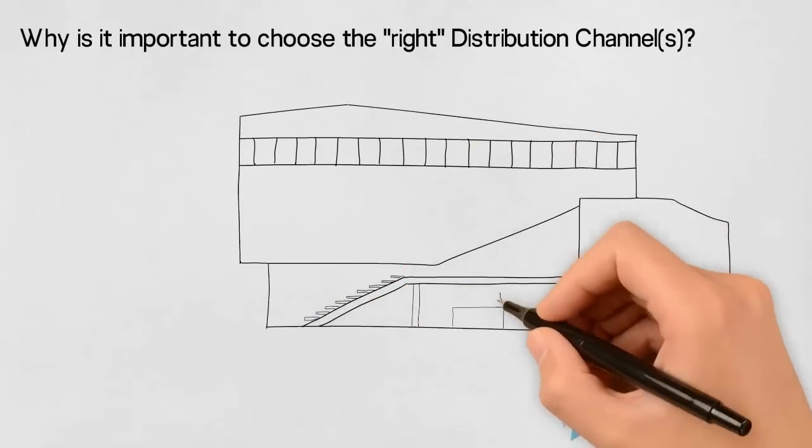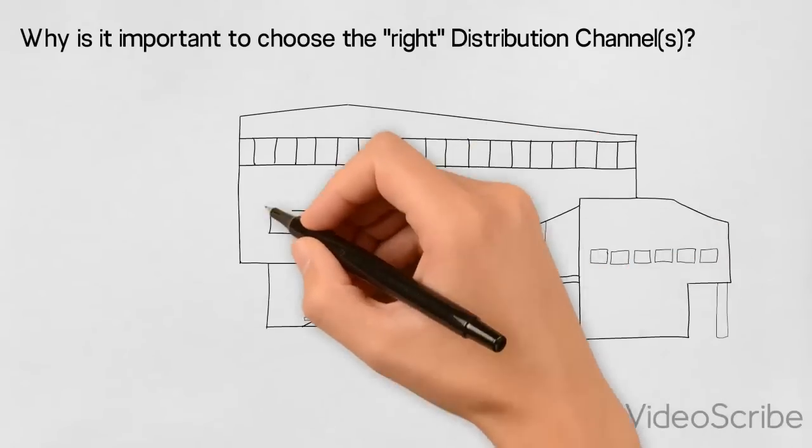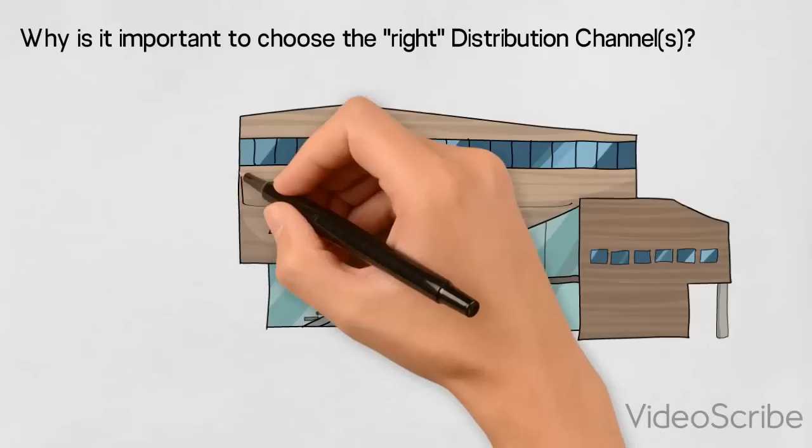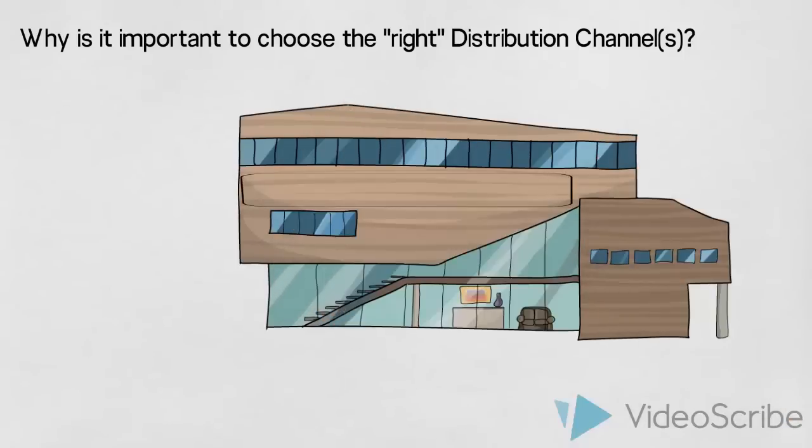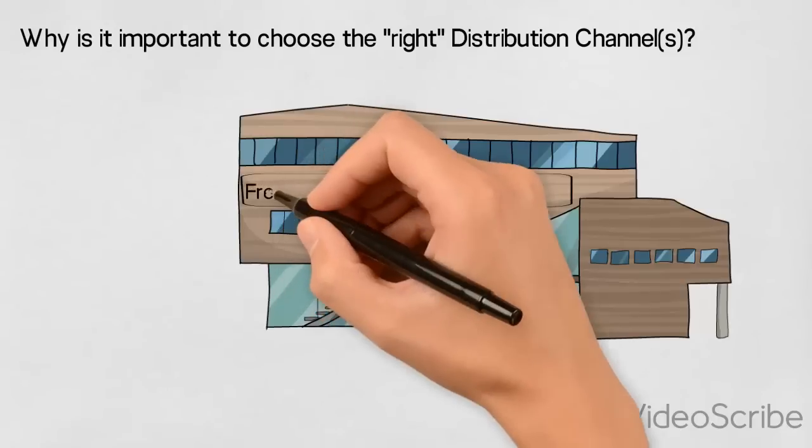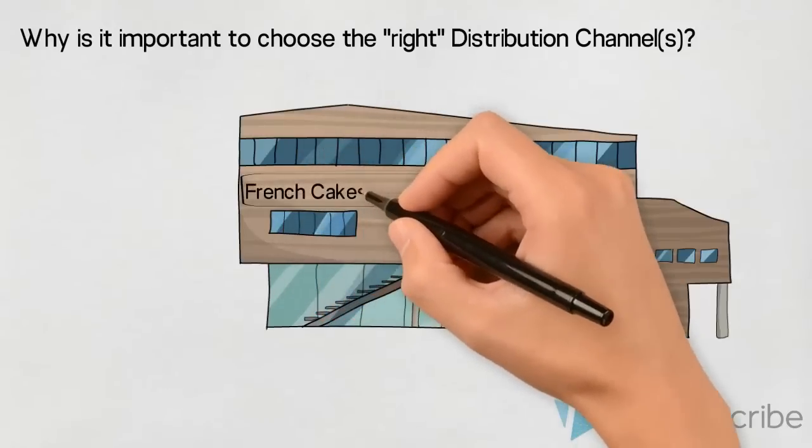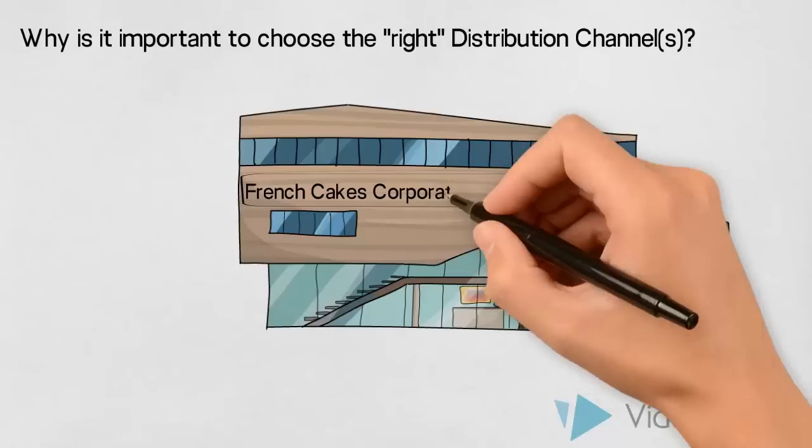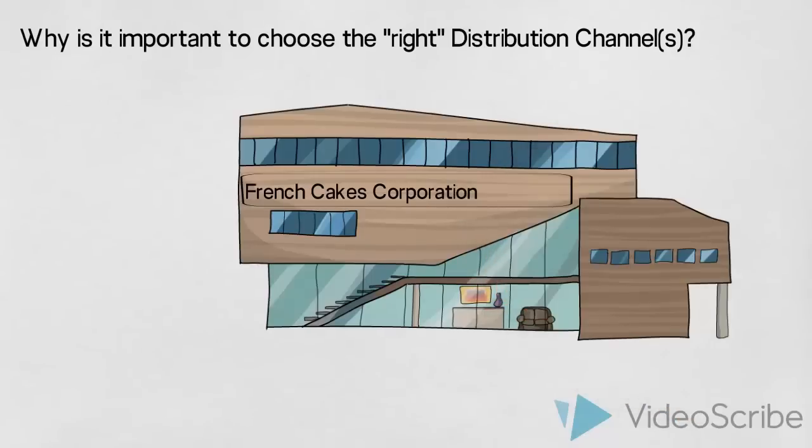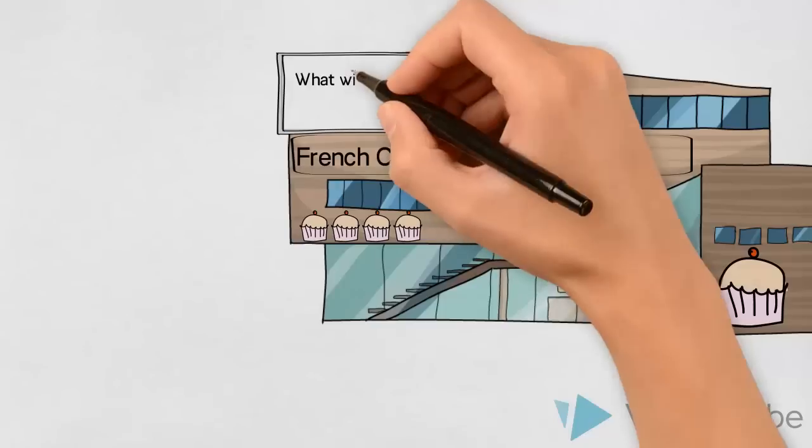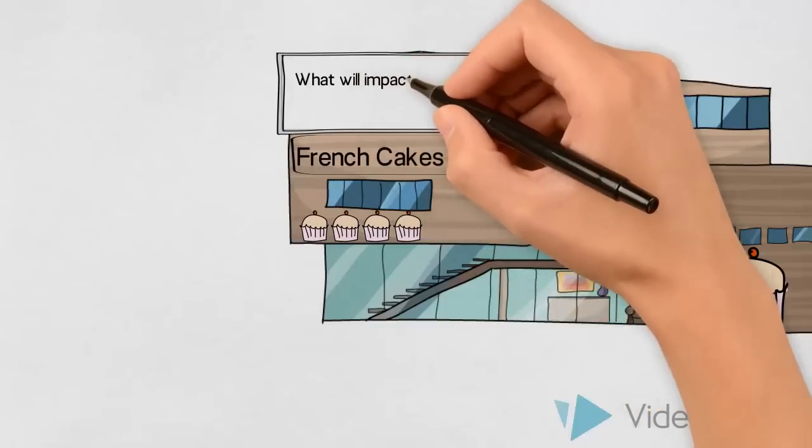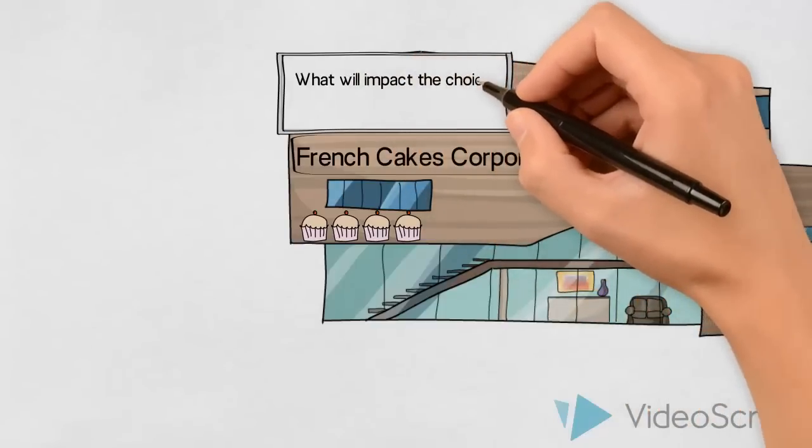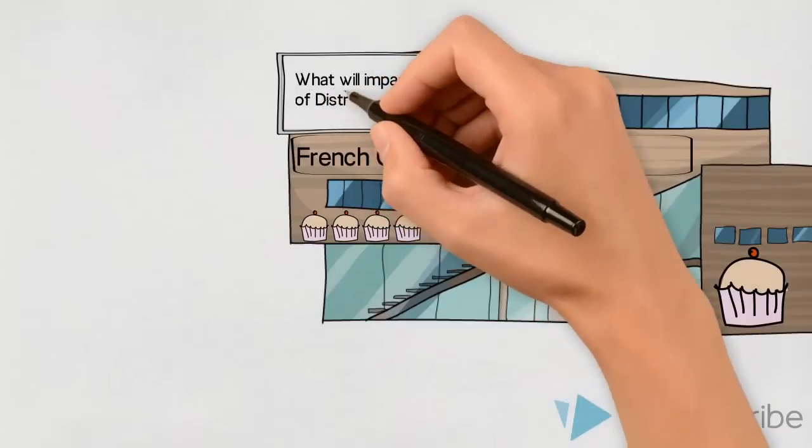This business produces French cakes and desserts. In these modern production facilities, well-educated confectioners develop recipes and create delicious cakes and desserts, ready to be sold and distributed to cake-loving customers. What will impact the success of the chosen distribution channels? And subsequently, which considerations are relevant when making their choice of distribution setup?